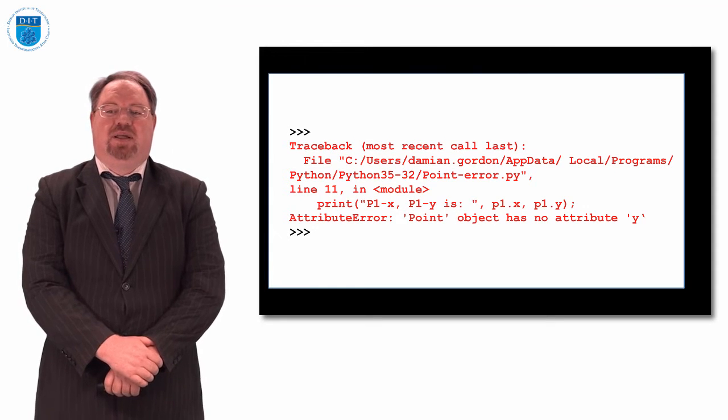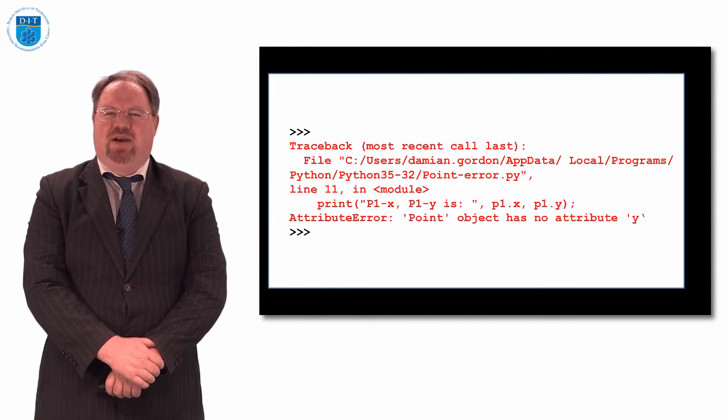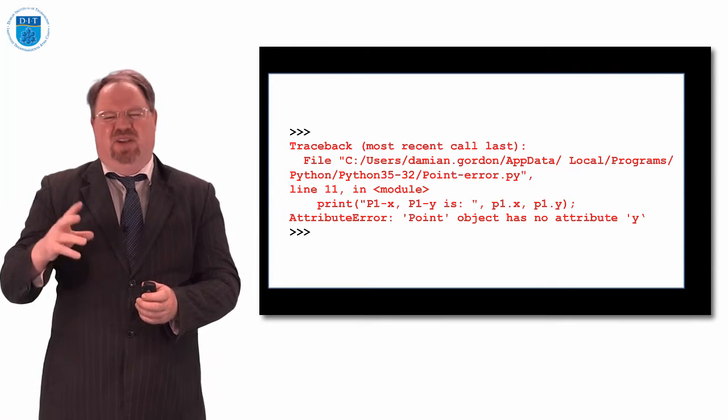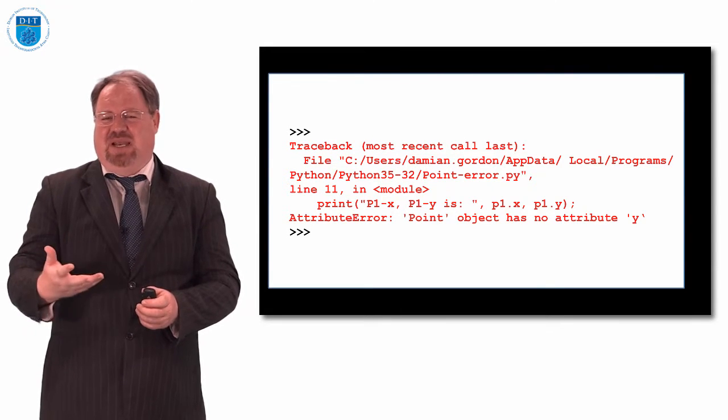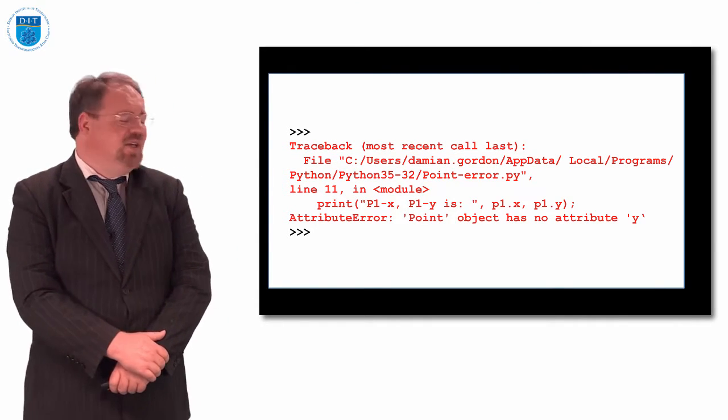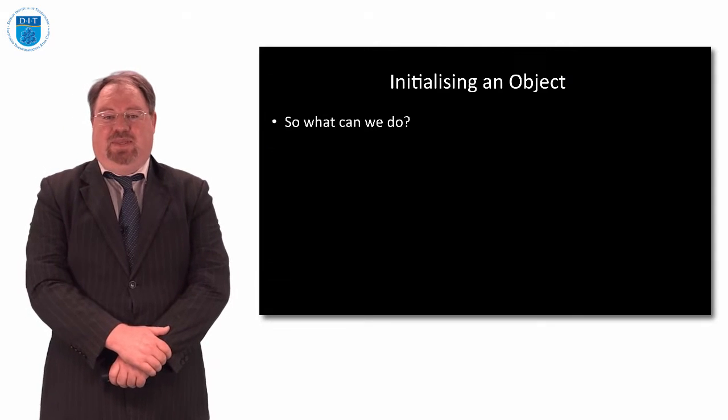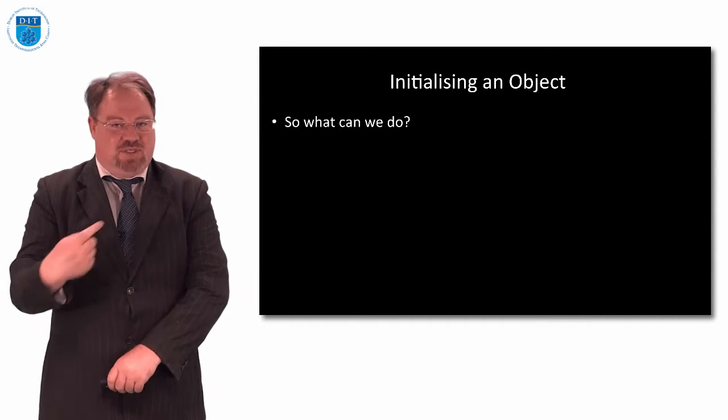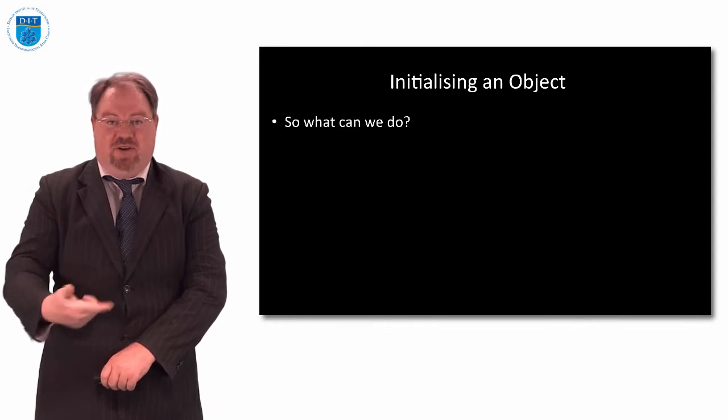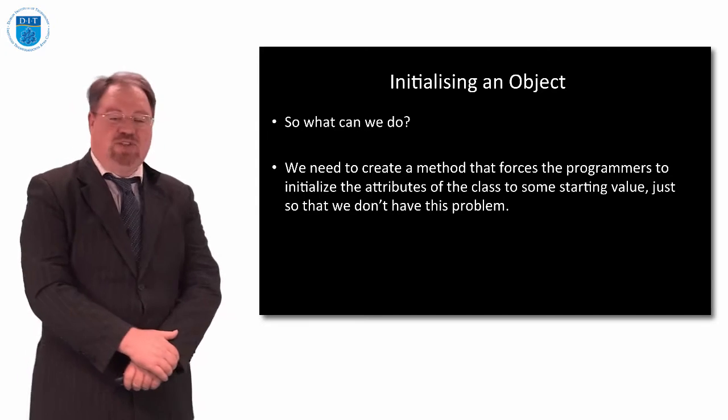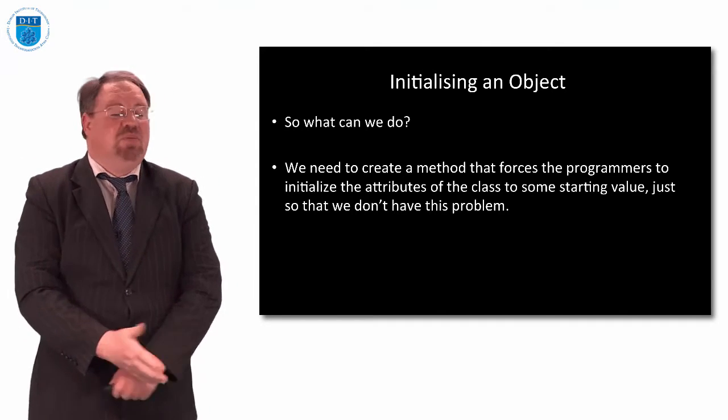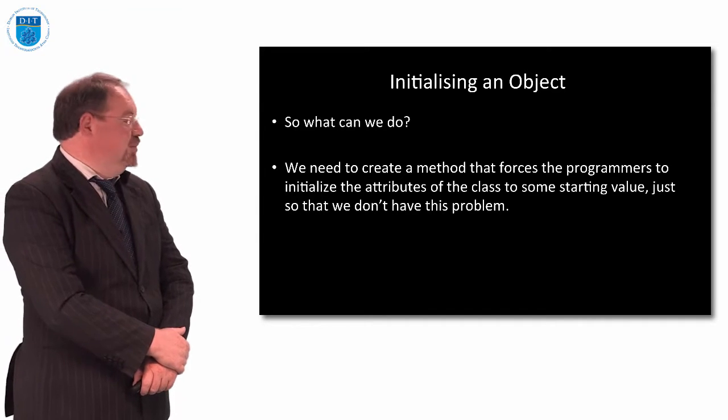So if we leave out, when we declare a particular class or object and it has a bunch of attributes, we have to give values to those attributes or declare them at least. Otherwise, we can't do anything with them and it causes problems, which is a pity. So what we should do is try and force the developers to give values to every variable within an object.